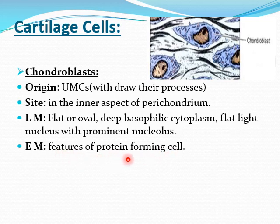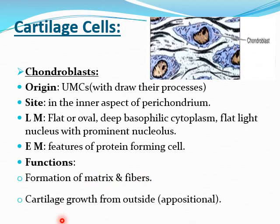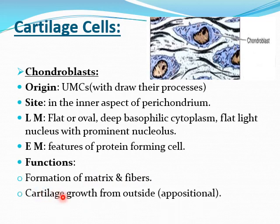By electron microscopy, the chondroblast shows features of a protein-forming cell: rough endoplasmic reticulum, Golgi apparatus, and mitochondria. The nucleus is euchromatic with prominent nucleoli. The function of the chondroblast is the formation of matrix and fibers. It is important for growth of cartilage from outside — a process called appositional growth.